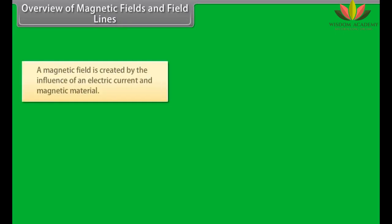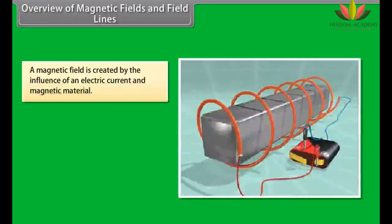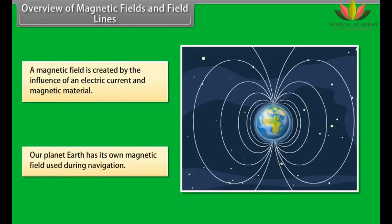Overview of magnetic fields and field lines. A magnetic field is created by the magnetic influence of an electric current and magnetic material. Our planet Earth produces its own magnetic field, which is an important factor during navigation.